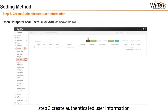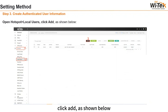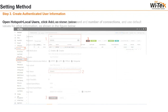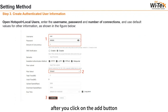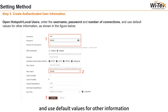Step 3: Create Authenticated User Information. Open Hotspot > Local Users, click Add as shown below. After you click the Add button, you can customize the login account, password, and number of connections. Use default values for other information, as shown in the figure below.